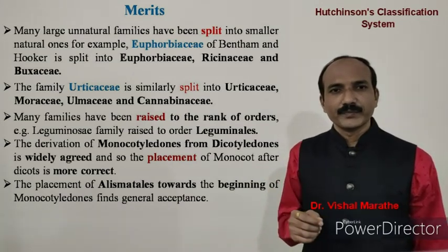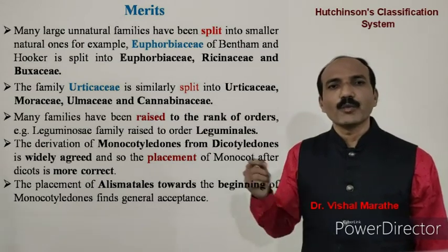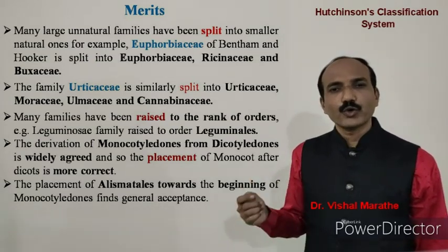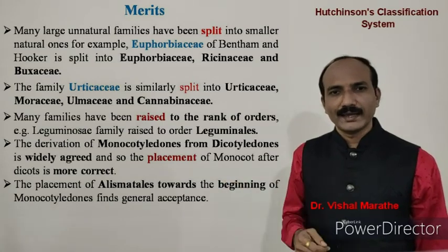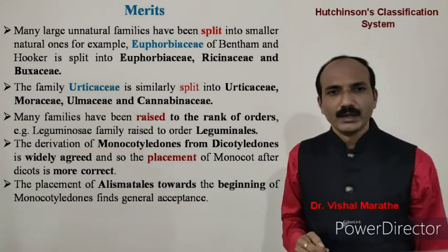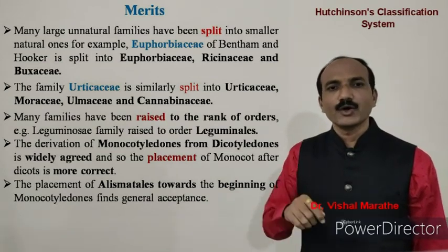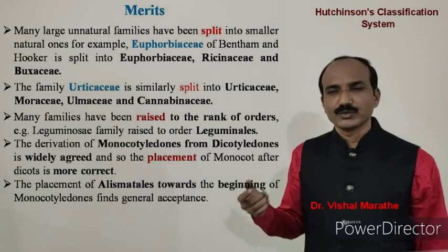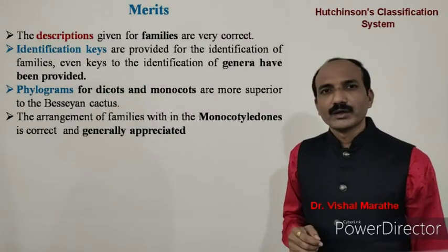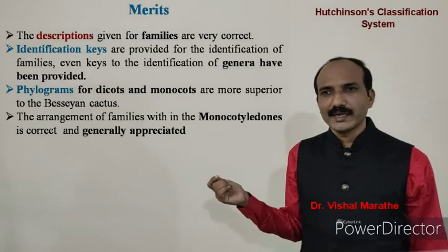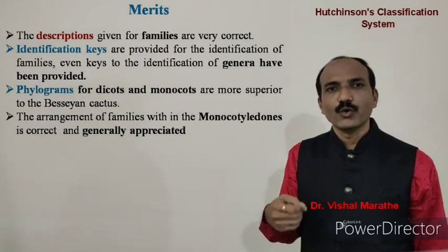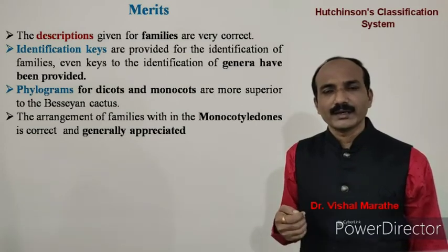Many families have been raised to the rank of orders; for example, the Leguminosae family was raised to order Leguminales. The derivation of monocotyledons from dicotyledons is widely agreed upon, and the placement of monocotyledons after dicotyledons is considered more correct. The placement of Alismatales towards the beginning of monocotyledons finds general acceptance, and in modern concepts Alismatales are also considered more primitive. Descriptions given for the families are very accurate, as Hutchinson personally observed each specimen and created his own illustrations.